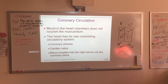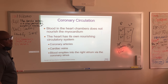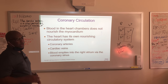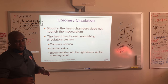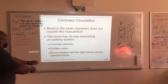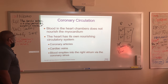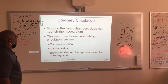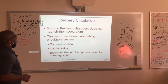First bullet: blood in the heart chambers does not nourish the myocardium — the myocardium is your heart. It is nourished by different areas of blood. The heart has its own nourishing circulatory system: coronary arteries and cardiac veins. Blood empties into the right atrium via the coronary sinus.